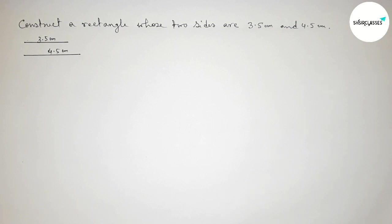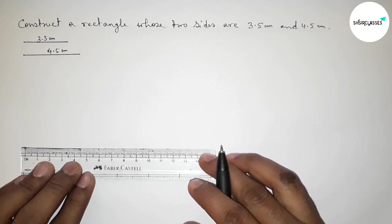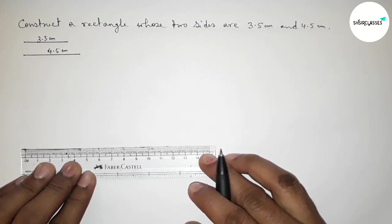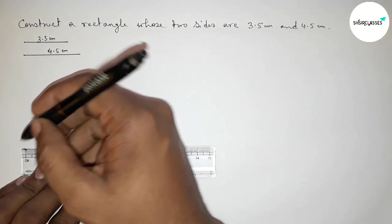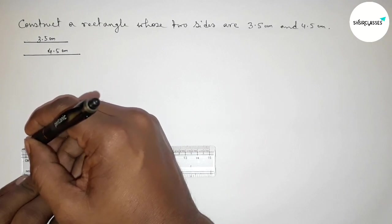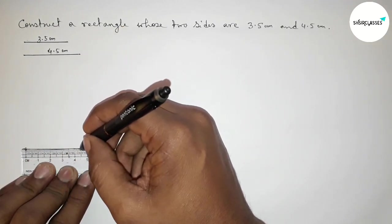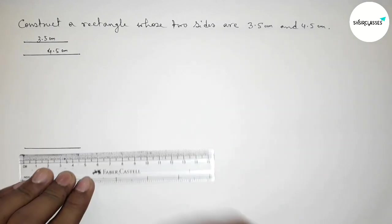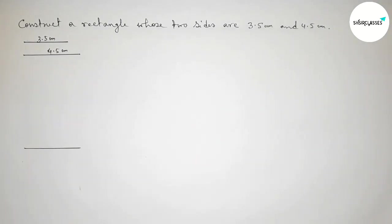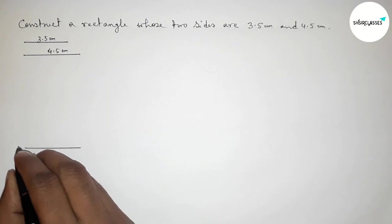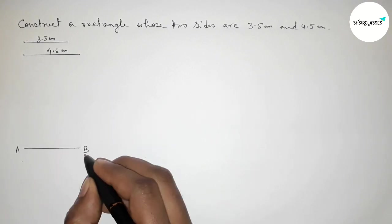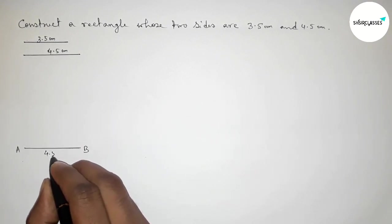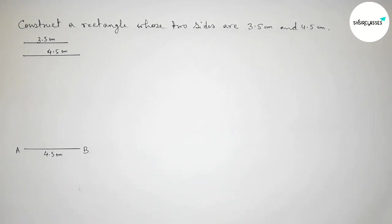Now we have to draw a line segment of 4.5 centimeters. With the help of a scale, drawing a 4.5 centimeter line segment. This is 4.5 centimeters. Marking point A here and point B here — so AB is 4.5 centimeters.